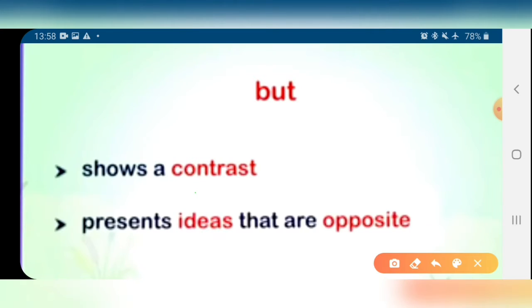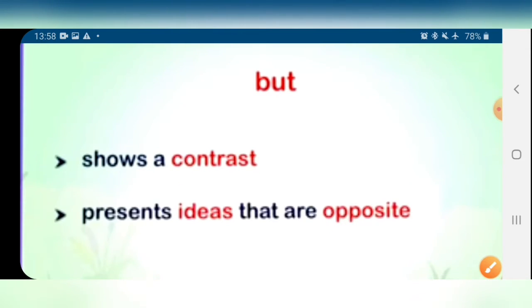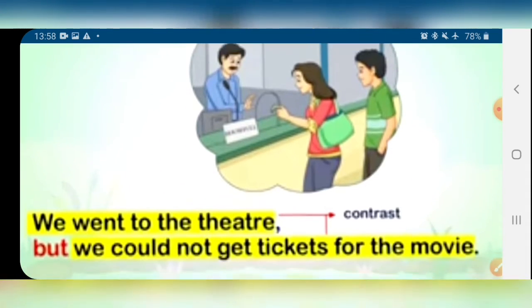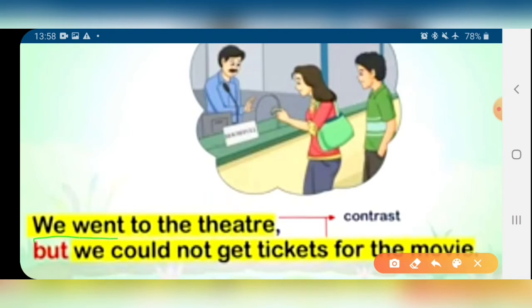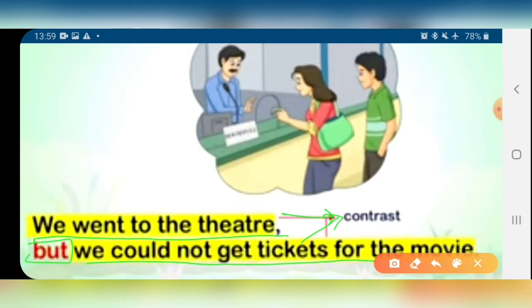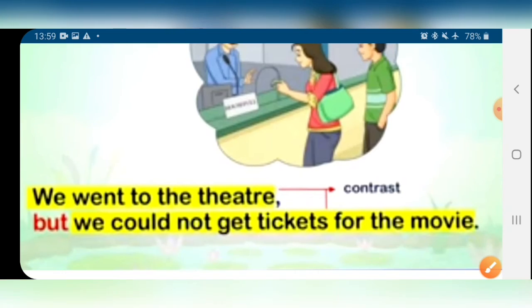Then there is 'but'. 'But' we use to show contrast — it presents ideas that are opposite. When ideas show contrast, we use the conjunction 'but'. For example: 'We went to the theatre but we could not get tickets for the movie.' There is a contrast between two different pieces of information, so we have used 'but'.